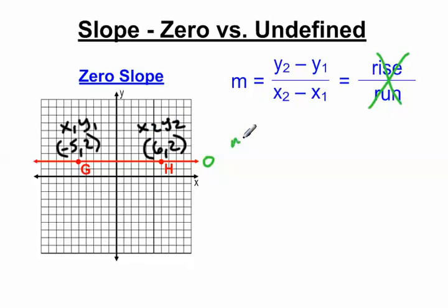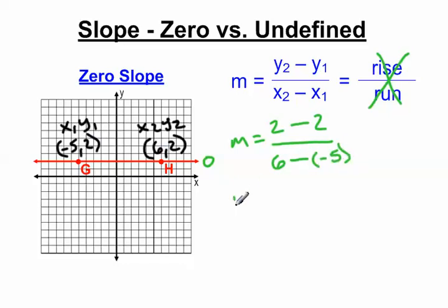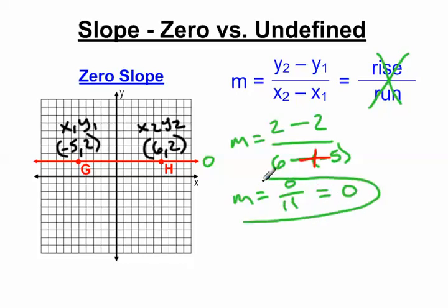So M equals y2 minus y1 over x2 minus x1. Y2 is two, minus y1 which is two, all divided by x2 which is six, subtract x1 which is negative five. Two minus two is zero on top. Then six minus negative five — two negatives make a positive — so six plus five is eleven. Zero divided by anything is going to give us zero, so the slope of this line is zero. That's how we get zero.